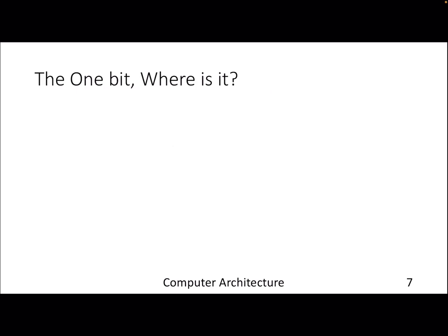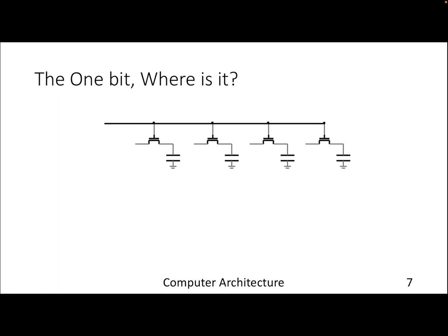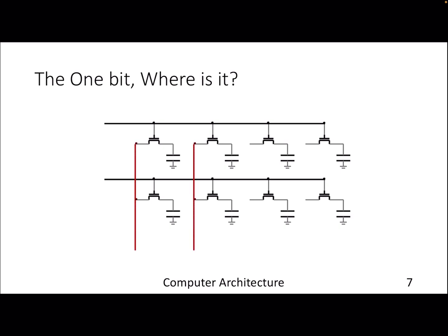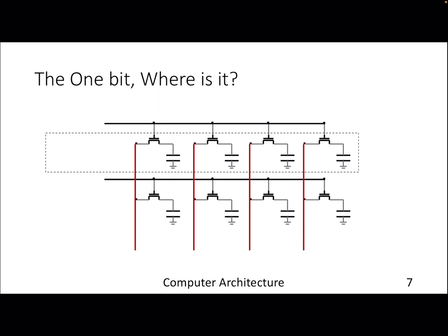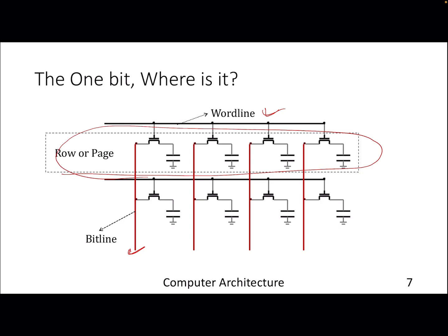Where exactly is one bit stored? The one bit is stored inside the array, which is part of the bank. Similar to cache examples, you will find a bit line and a word line, and the intersection between a bit line and a word line gives you one particular bit. This is also known as a row in DRAM terminology, or a page — note this is different from an OS page, don't get confused. Each intersection stores one bit of information.